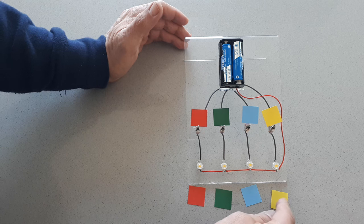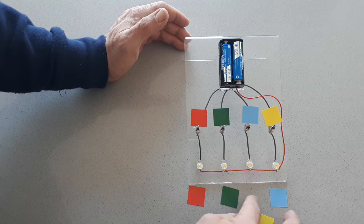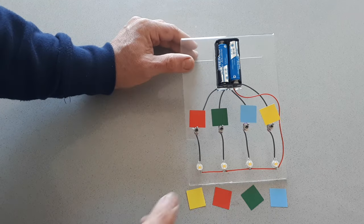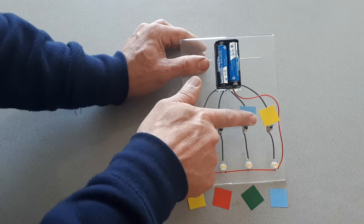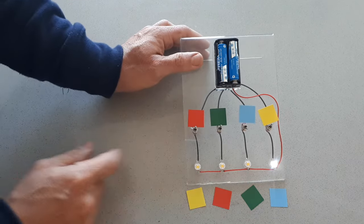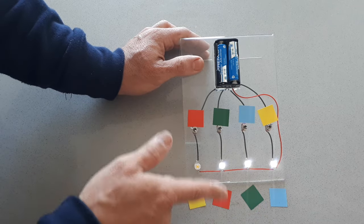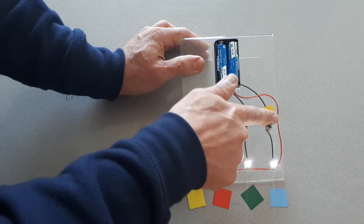So now if I exchange the positions, for example like that, this means that the blue, if I connect the blue, goes with the blue, the green one with the green one, the red one, and the yellow one.